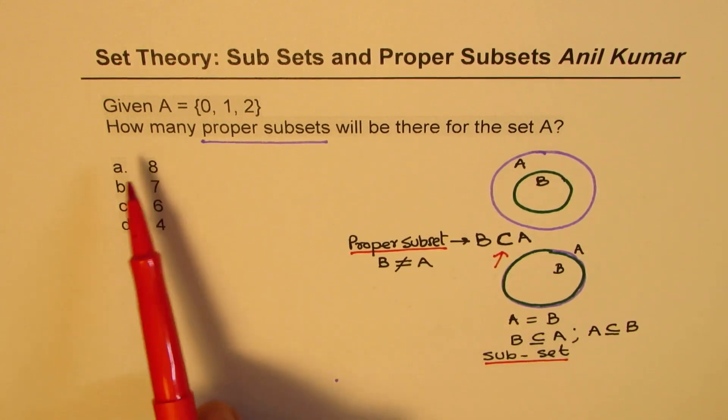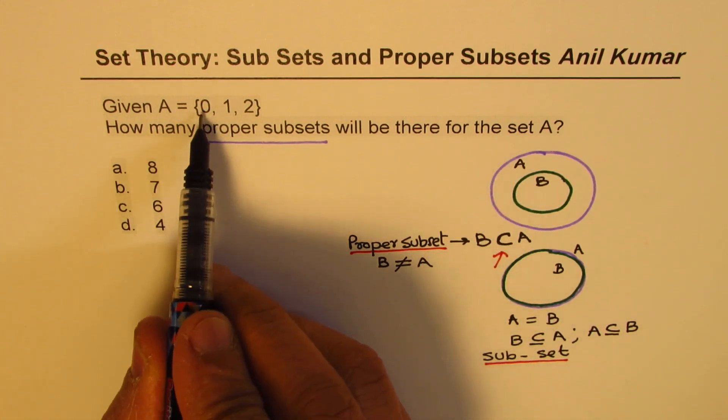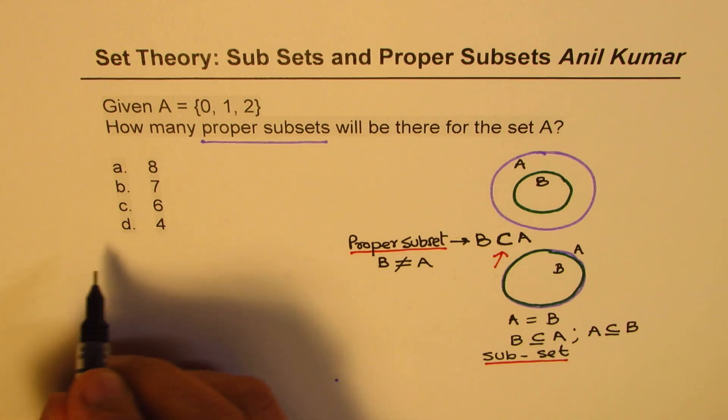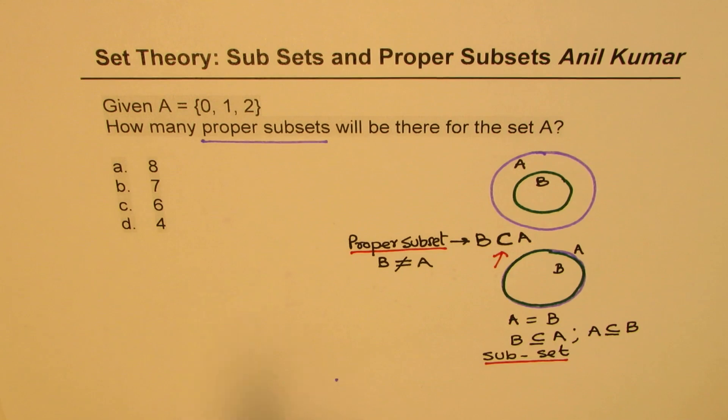Now let's look into the equation. How many proper subsets will be there for A? Now some of you know if the number of elements are three, so we have three elements, so we could have zero, we may not have zero, we could have one, we may not have one, we may have two, we may not have two.